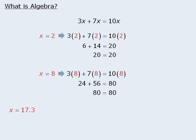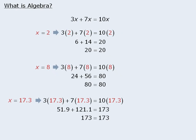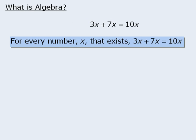Finally, if we evaluate 3x plus 7x and 10x for x equals 17.3, we see that 3x plus 7x and 10x both evaluate to be 173. From here we might make a general comment about 3x plus 7x and 10x. We can say that for every possible value of x, 3x plus 7x will always have the same value as 10x.